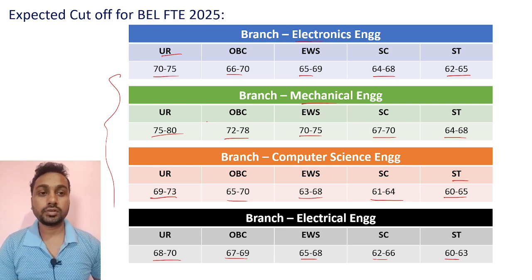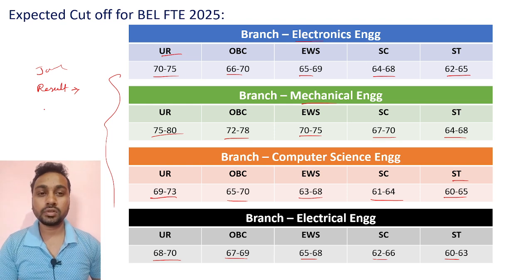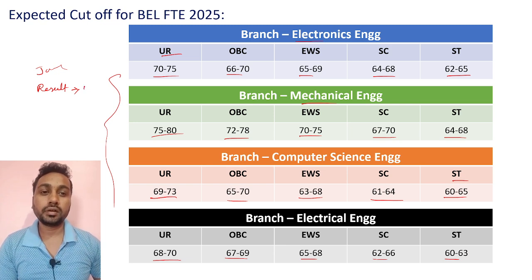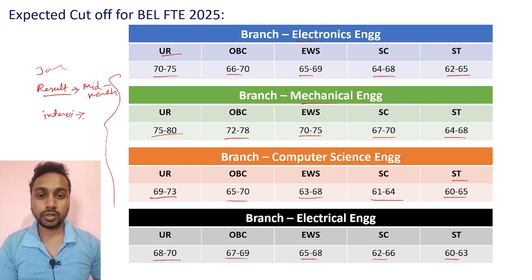You can consider these as expected cutoffs with one or two marks variation when final marks are released. The exam happened in January and you have received the answer key. You can expect the result in mid to end of March, and after two weeks from the result, the interview call is expected around mid to end of April.